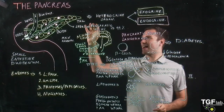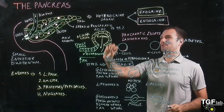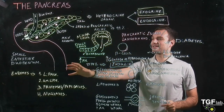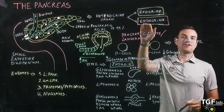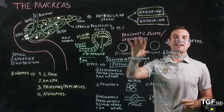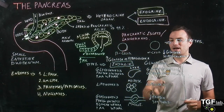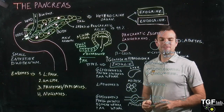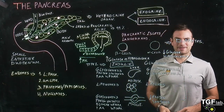So we have gone through the pancreas — the anatomy of the pancreas. We have gone through the exocrine function of the pancreas, the secretion of enzymes and bicarbonate. And then the endocrine function of the pancreas in the pancreatic islets with the secretion of insulin and glucagon, and the effects of insulin and glucagon in the different parts of our body. I hope that you enjoyed this lecture. See you next week.